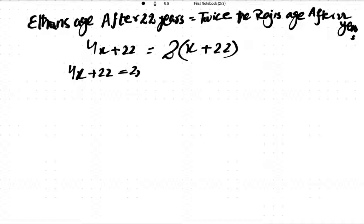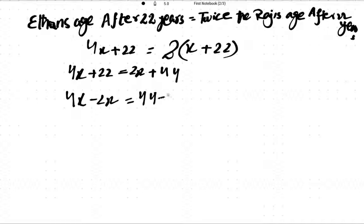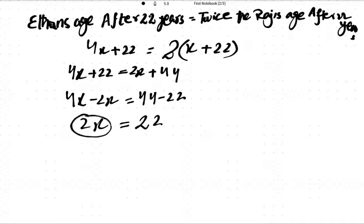So expanding: 4x + 22 = 2x + 44. Rearranging: 4x minus 2x equals 44 minus 22, giving us 2x = 22. So Noora's present age is 2x, which equals 22.